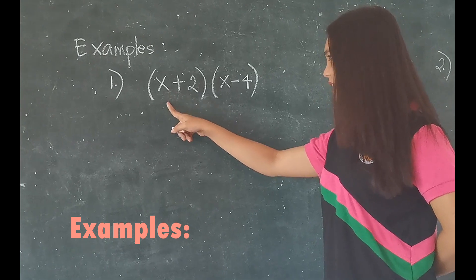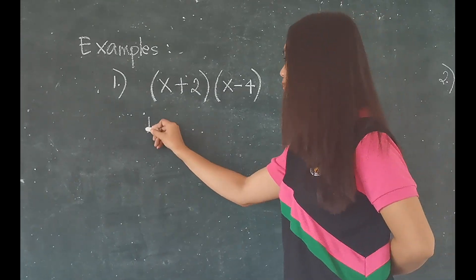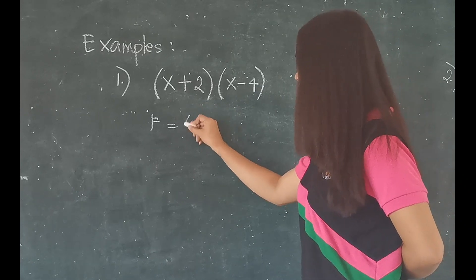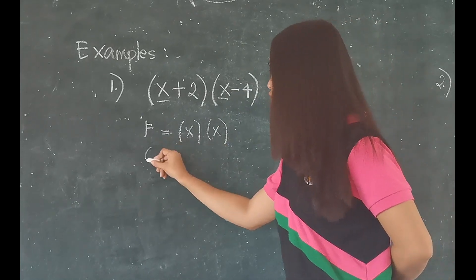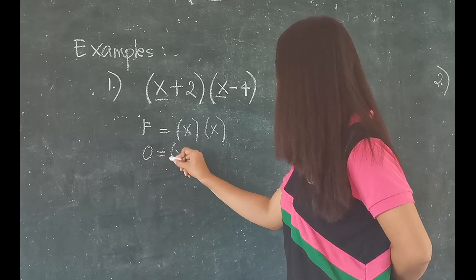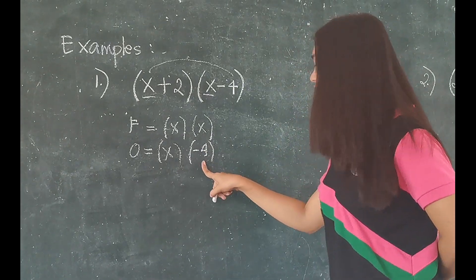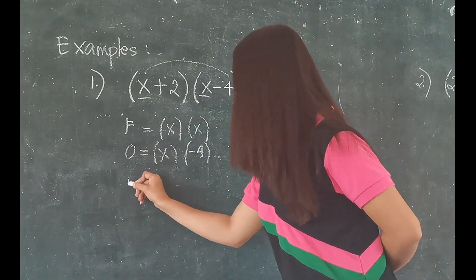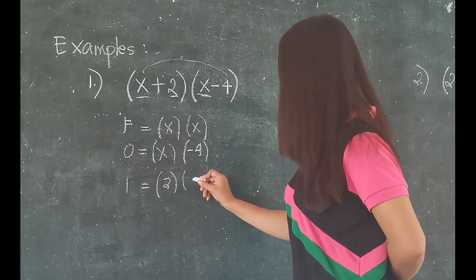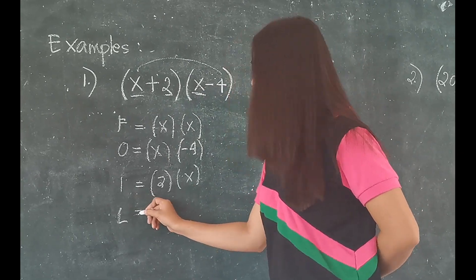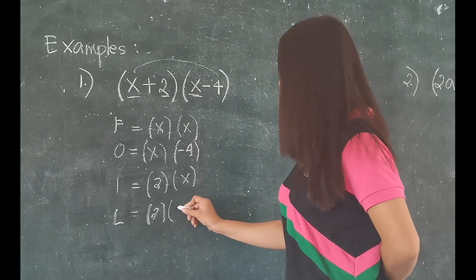For example, the binomial x plus 2 times x minus 4. Applying the first term, we have x being multiplied to x. For the outer term, x is multiplied by negative 4 — take note, negative 4 because this is negative. For the inner term, 2 is multiplied by x. And lastly, L: 2 being multiplied by the last term, which is negative 4.